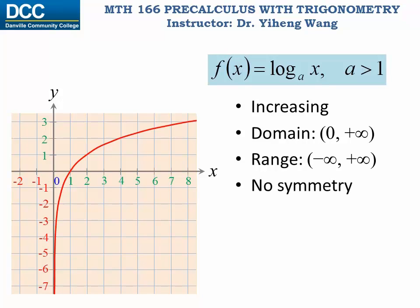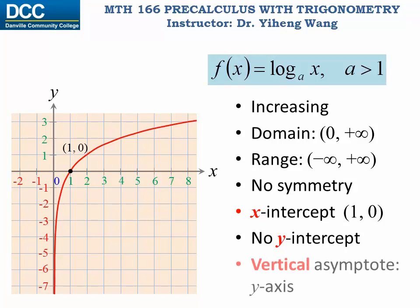Just like the exponential function, the logarithmic function graph has no symmetry. It has an x-intercept now, which is one zero. Based on the same reason, a raised to the zero's power always equals to one. Now it does not have y-intercept, but it does have a vertical asymptote, which is the y-axis.